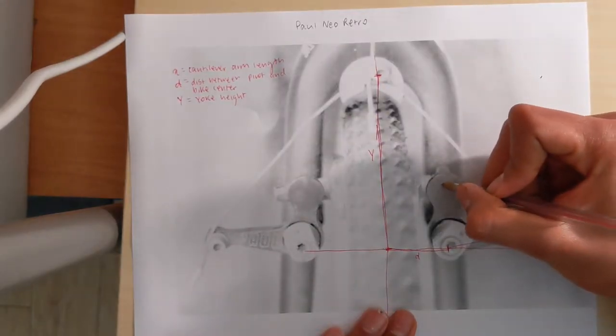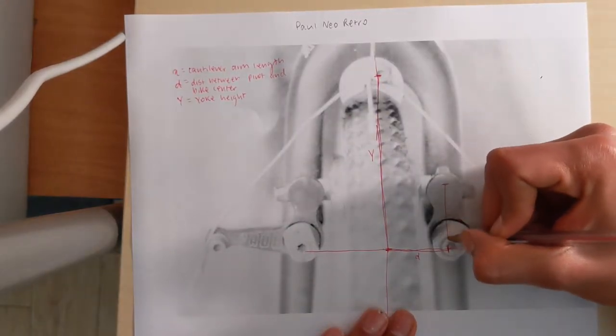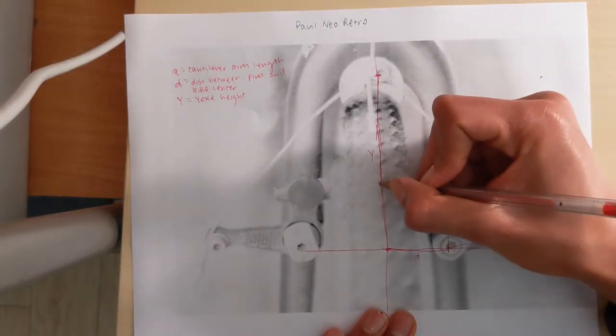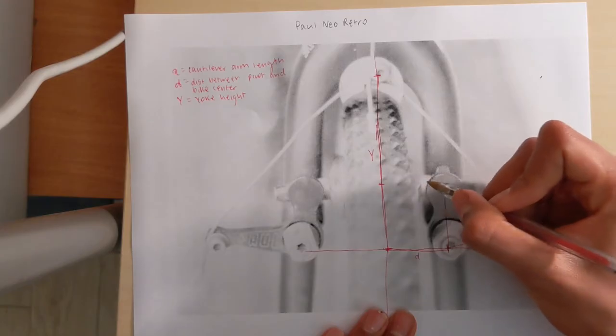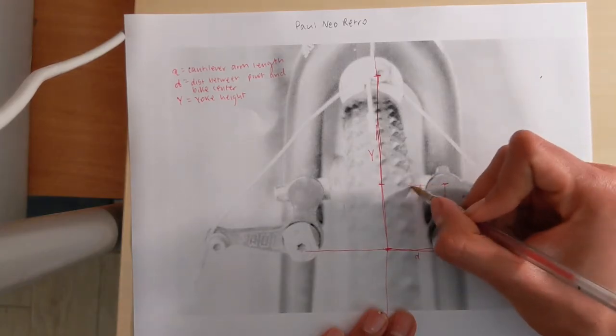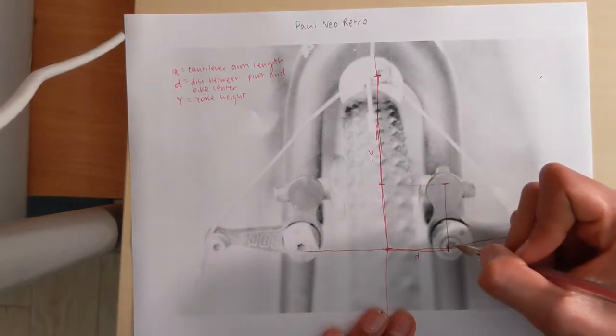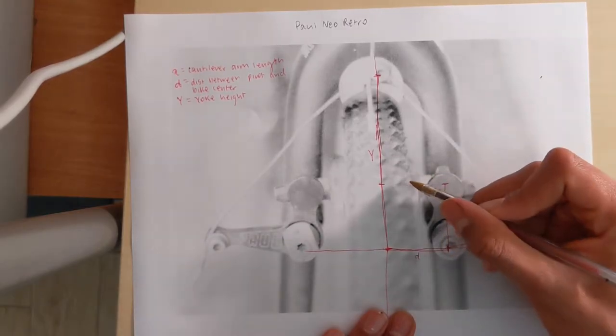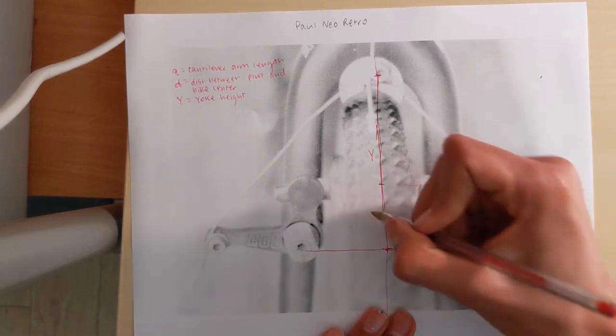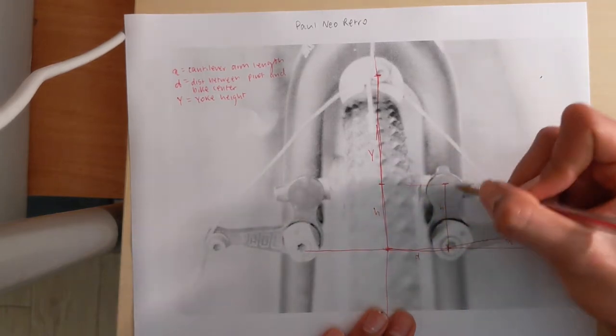And we have another variable. This is h. I'm going to mark it in two places. h is where the brake pads contact the rim, so the height between the pivot and the place where the brake pads contact the rim. We're going to call that h.